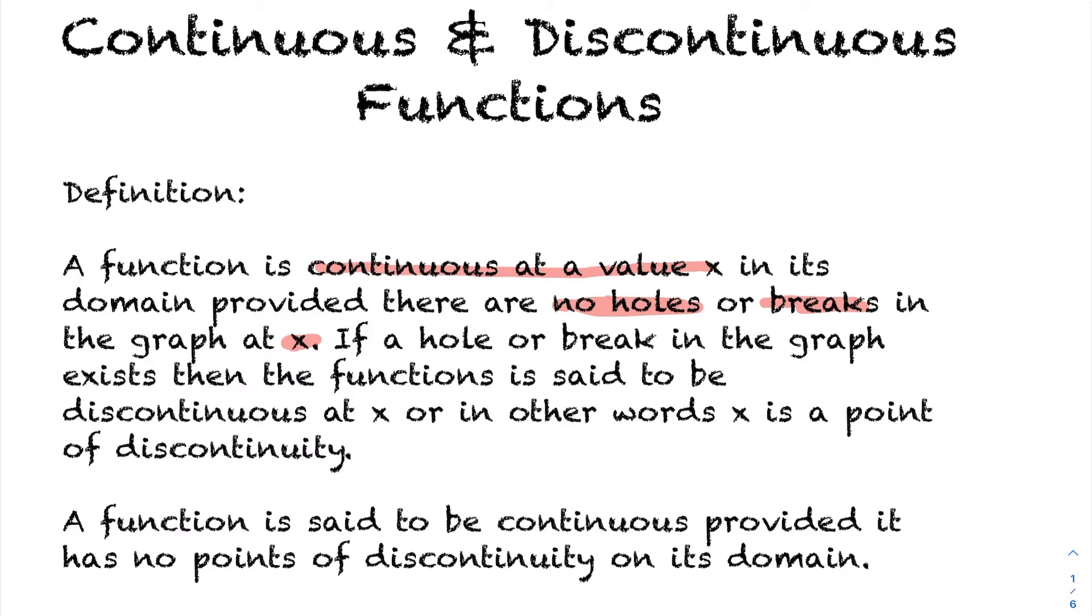If a hole or break does exist at that value of x that you're interested in, that's actually discontinuous at x, or in other words they would say x is a point of discontinuity. Now a function is said to be continuous, so what does that mean when you say a function is continuous?